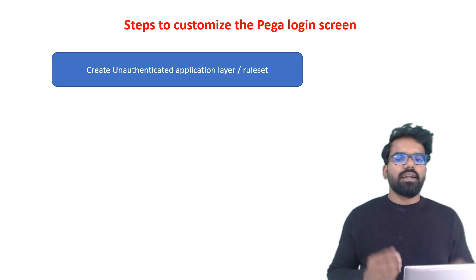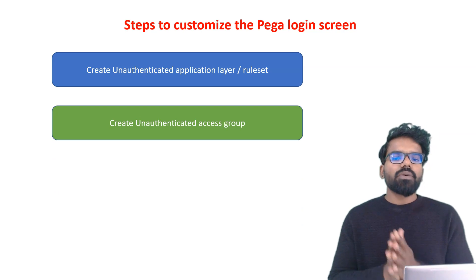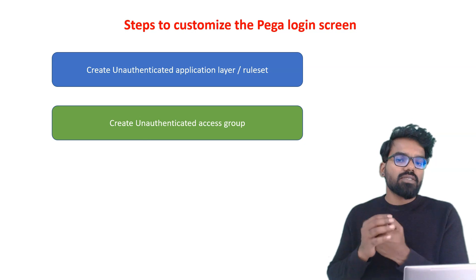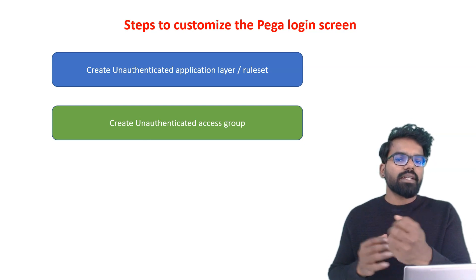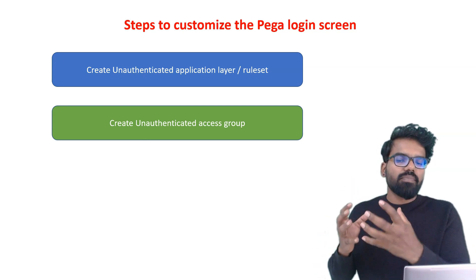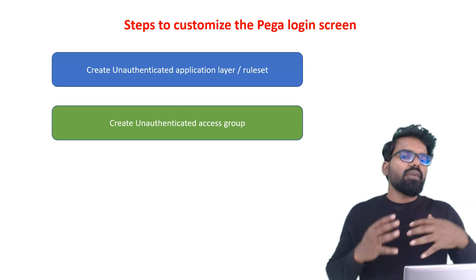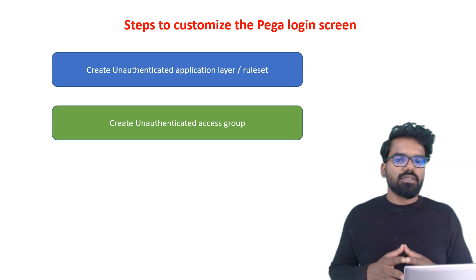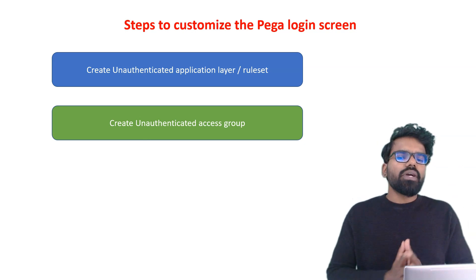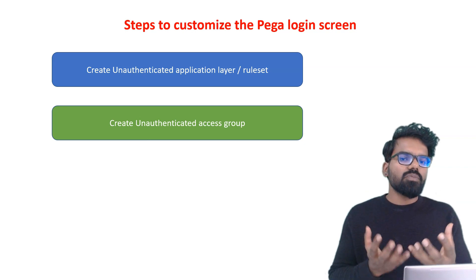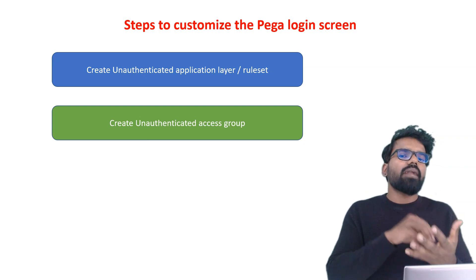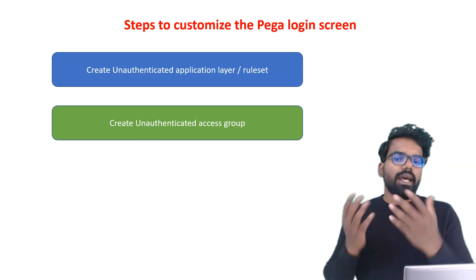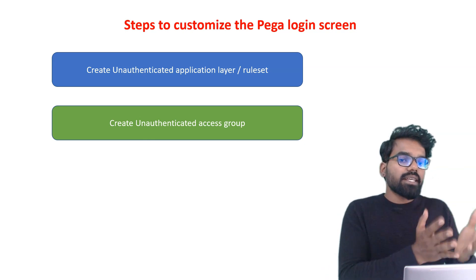Now our application layer is ready. The next step is we need to create an unauthenticated access group. Everyone should have an access group to point to an application. An access group is the instance that points to an application. Even for unauthenticated users, you need an unauthenticated access group so that it can point to the unauthenticated application. You also need to provide the guest access role.